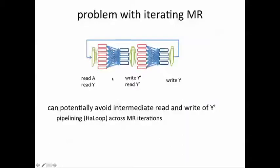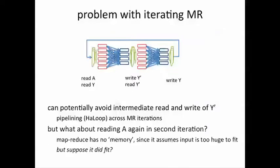But we still have a problem of having to read A again. Notice MapReduce does not have any memory. The basic assumption is that the data is just too large, it'll never fit in memory, and so you essentially have to read A again and again.